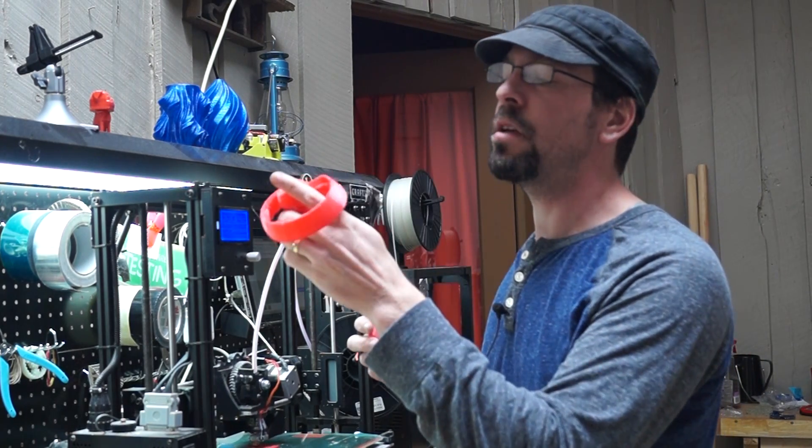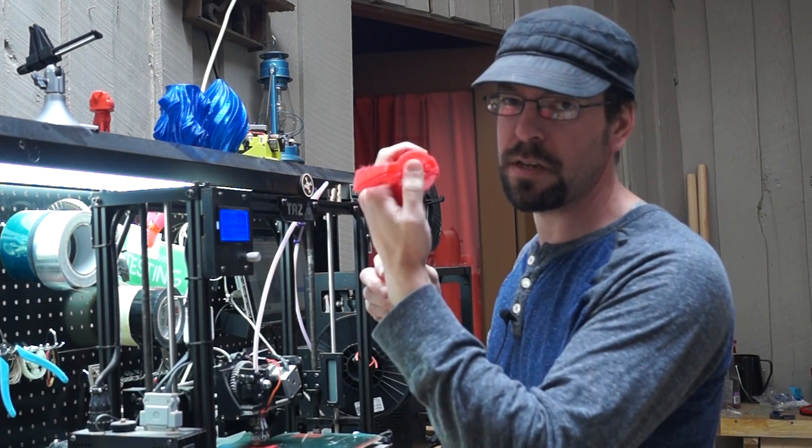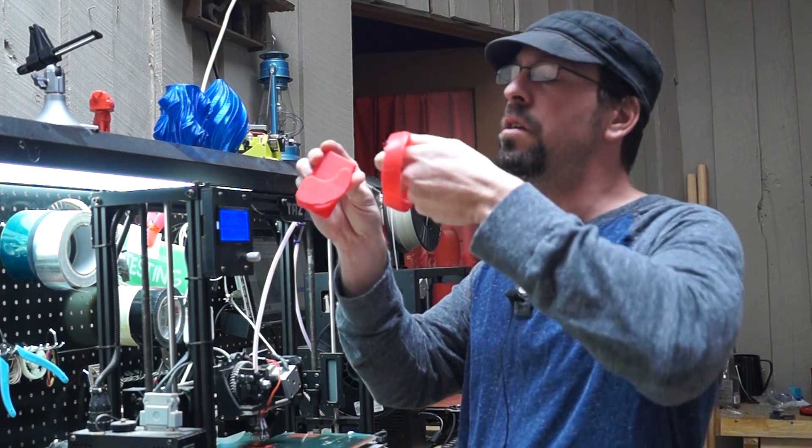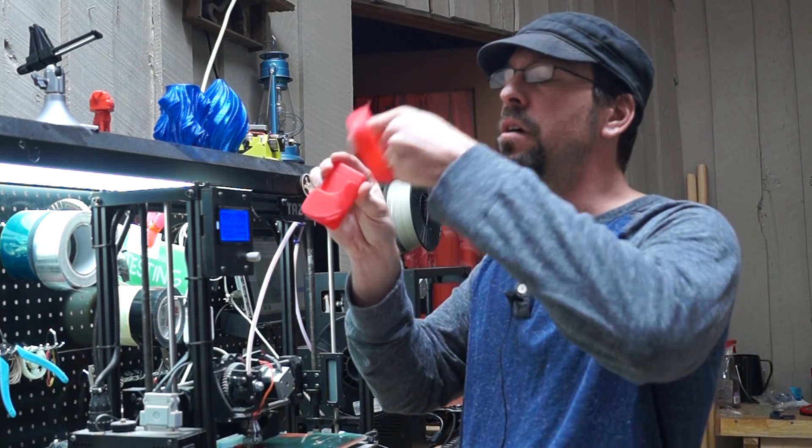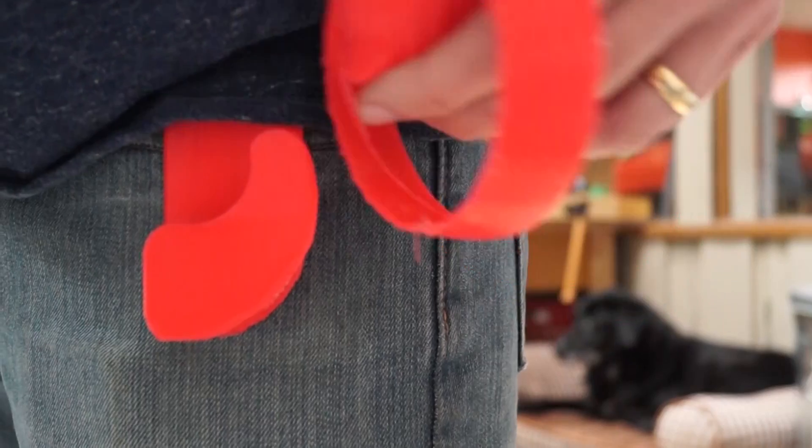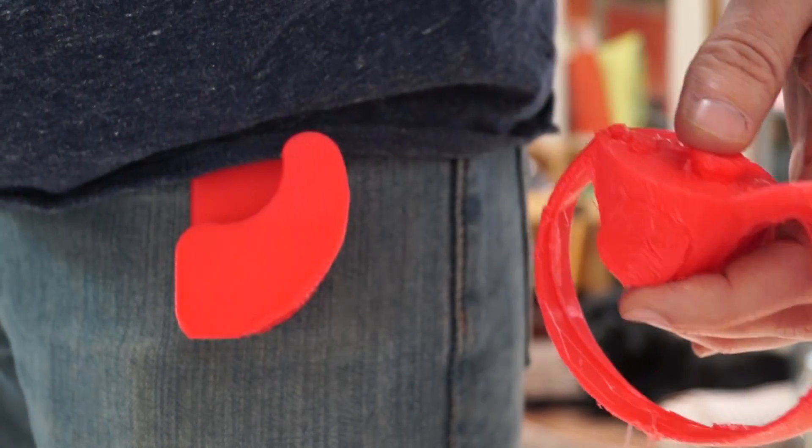So I printed this out. Even though it had some problems printing, I didn't bother fixing it because this is just kind of a rough estimate. So you can slide it on and slide it back off. And this could just slide into your pocket, over your belt, whatever. And that way you can holster your Oculus Touches quick and easy and take them back off.